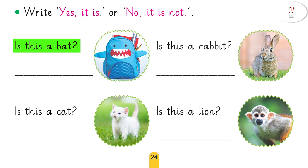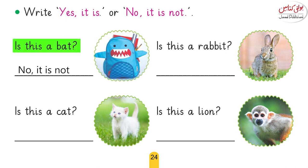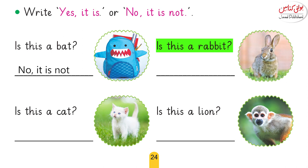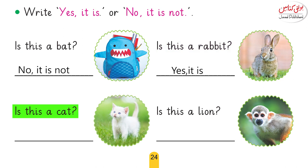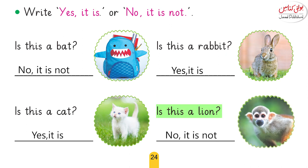I show you some pictures and ask some questions. You just answer according to your opinion. Is this a bat? No, this is a bag, so we answer: no, it is not. Is this a rabbit? Yes, it is. Is this a cat? Yes, it is. Is this a lion? No, it is not. Very good.